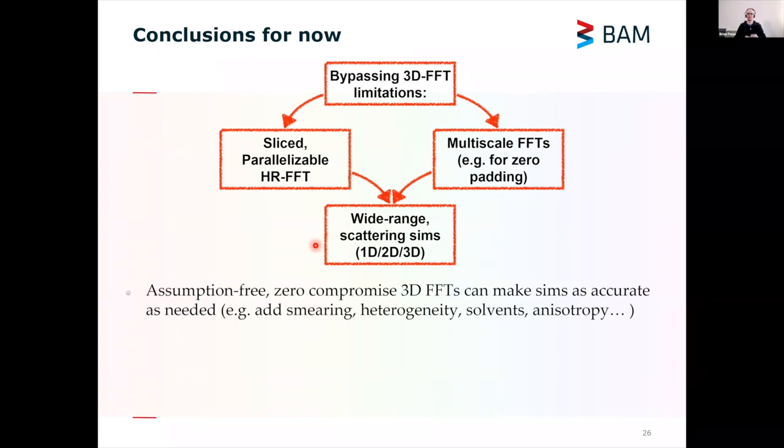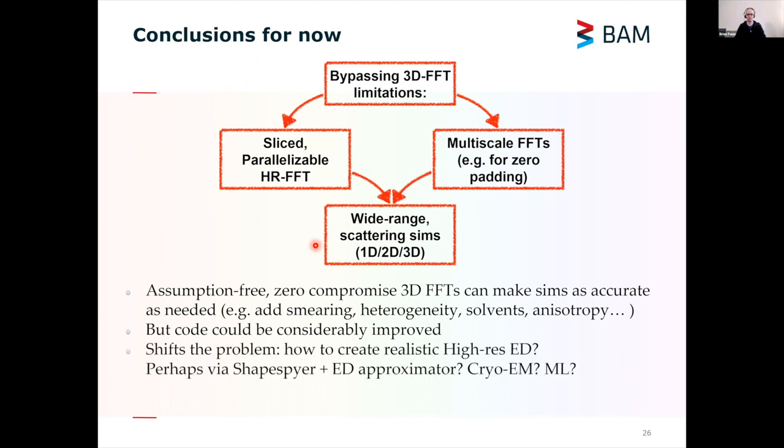The assumption-free, zero-compromised 3D FFTs can make these scattering pattern simulations as accurate as needed. You can add things like smearing, sample heterogeneity, solvents, anisotropy, etc. But the code could be considerably improved. I mean, this is just me writing some stuff in a Jupyter notebook. But anybody with a modicum of high-performance computing expertise can probably speed this up by another order of magnitude.